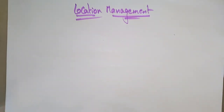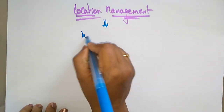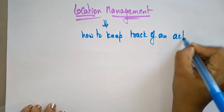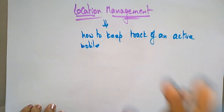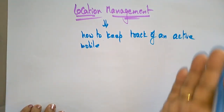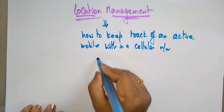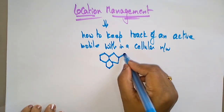Welcome back. The next topic in Mobile Computing is location management — how location is managed in mobile computing. Location management deals with how to keep track of an active mobile station. An active mobile means you are talking to someone, so your mobile is active. This location management deals with keeping track of your active mobile station within a cellular network.